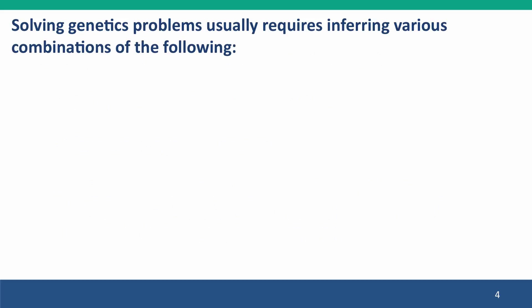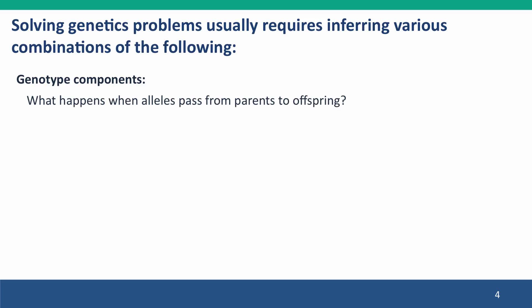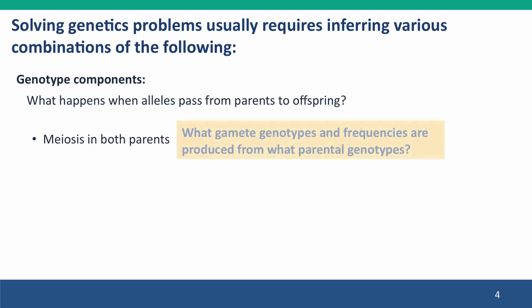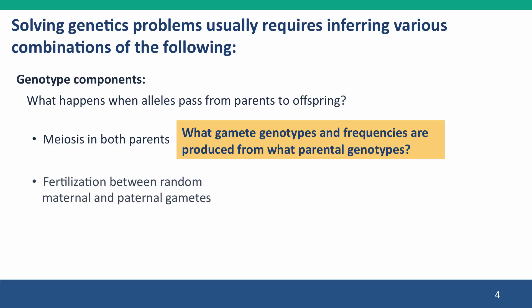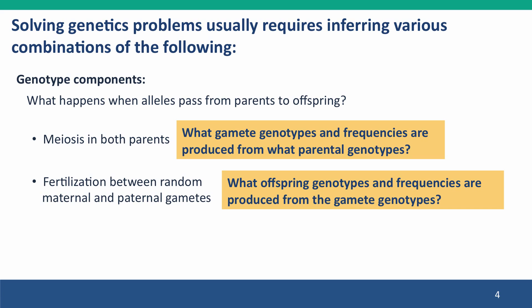Typically, solving a genetics problem requires you to figure out some components, some combinations of the following. You have to think about genotype components, about inheritance — what happens when alleles pass from the parents to the offspring. There are two parts to this: meiosis in both parents. So you have to figure out what gamete genotypes and frequencies are produced from what parental genotypes, or sometimes work backwards and say what parental genotypes could have produced these gametes. And then you also have to think about fertilization — how maternal and paternal gametes come together to produce the next generation, and predict the genotypes of the offspring and their frequencies.